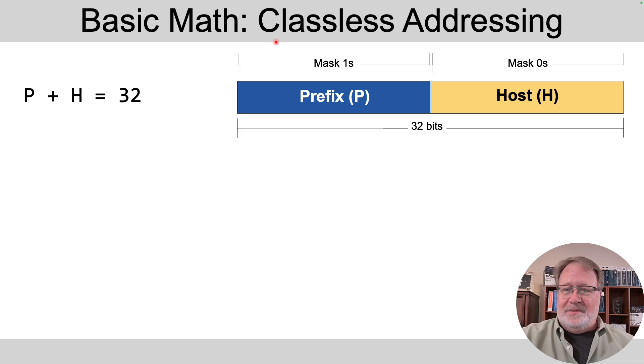So I can ignore class A, B, and C when I think about the structure. So it's a two-part structure that ignores class. So what are the two parts? The prefix, which is the part that's the same for every address in a subnet, the number that's consistent amongst all addresses in a subnet.